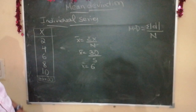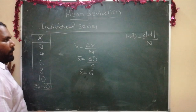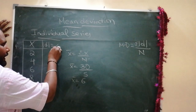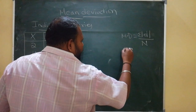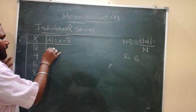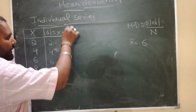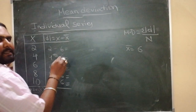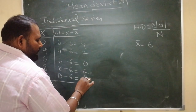Now x-bar is 6. After we get x-bar, we have to find the deviation, that is modulus d, which is nothing but x minus x-bar. Very important: while doing mean deviation, don't consider any signs — whether it may be a negative value, you have to consider it as a positive value. So: 2 minus 6 is 4, 4 minus 6 is 2, 6 minus 6 is 0, 8 minus 6 is 2, and 10 minus 6 is 4.